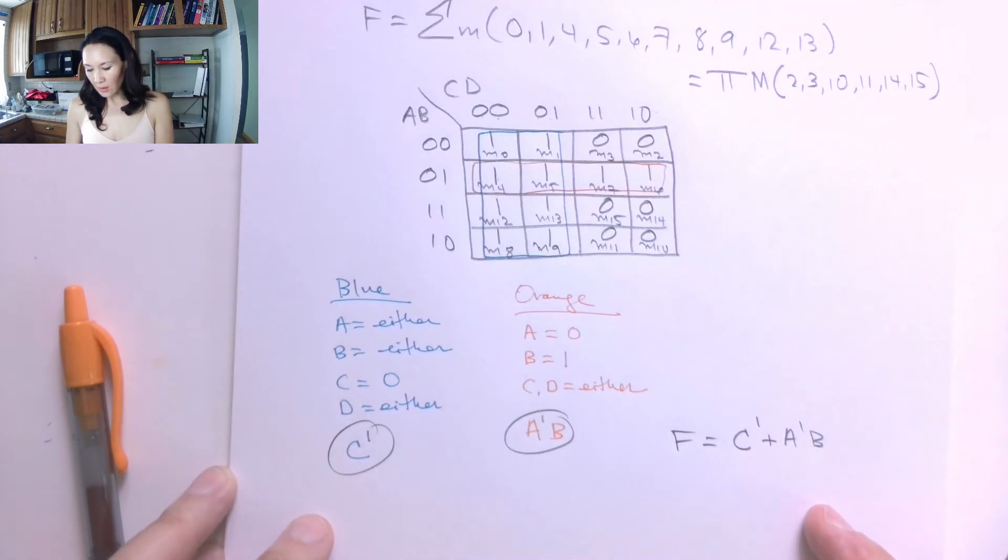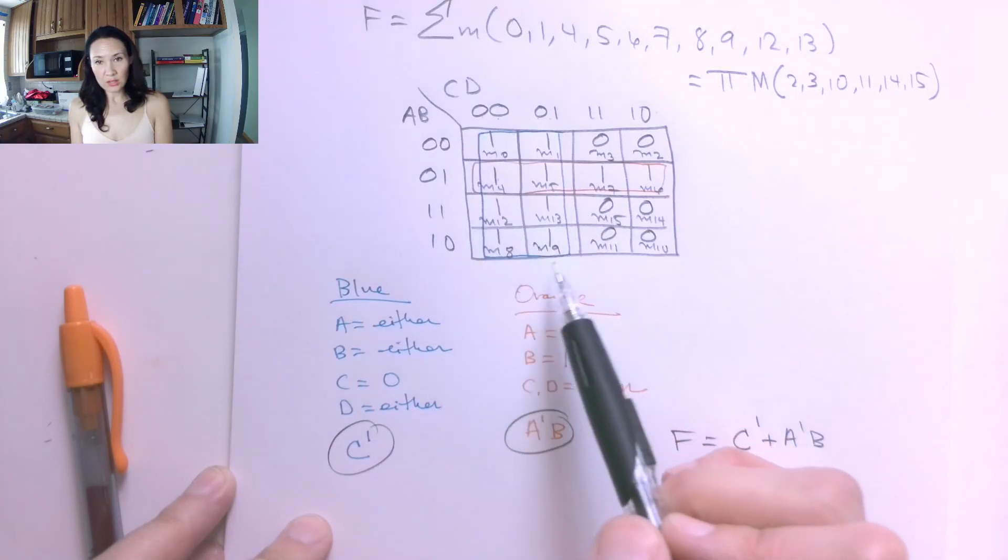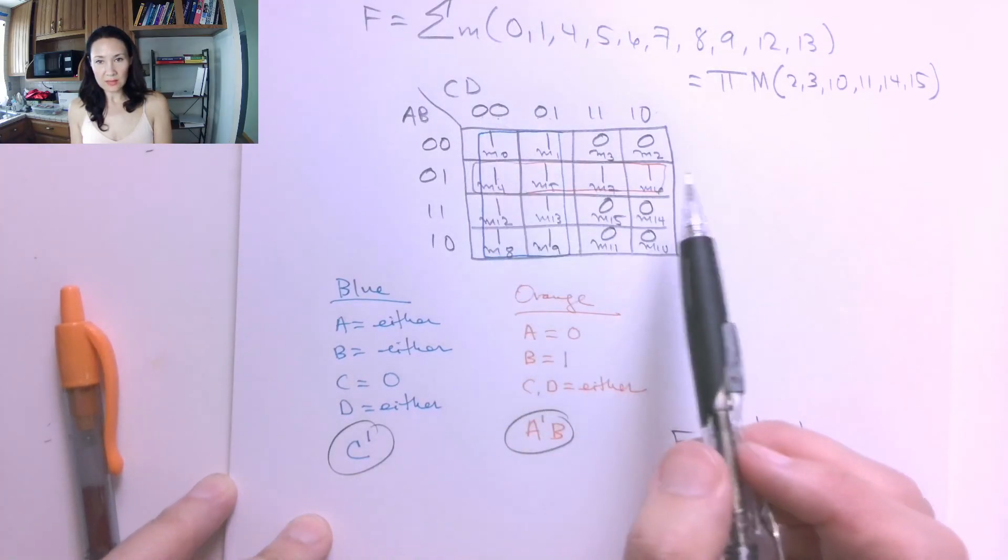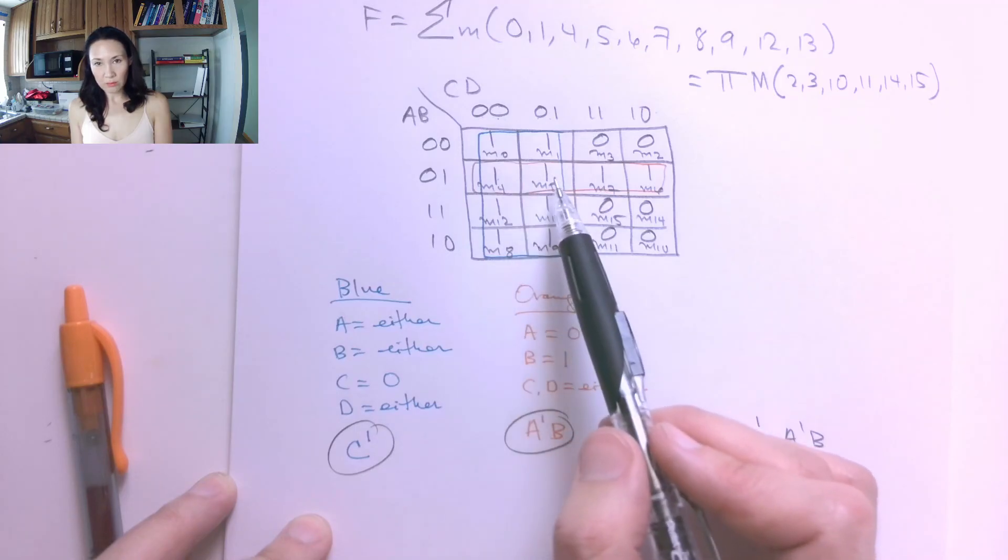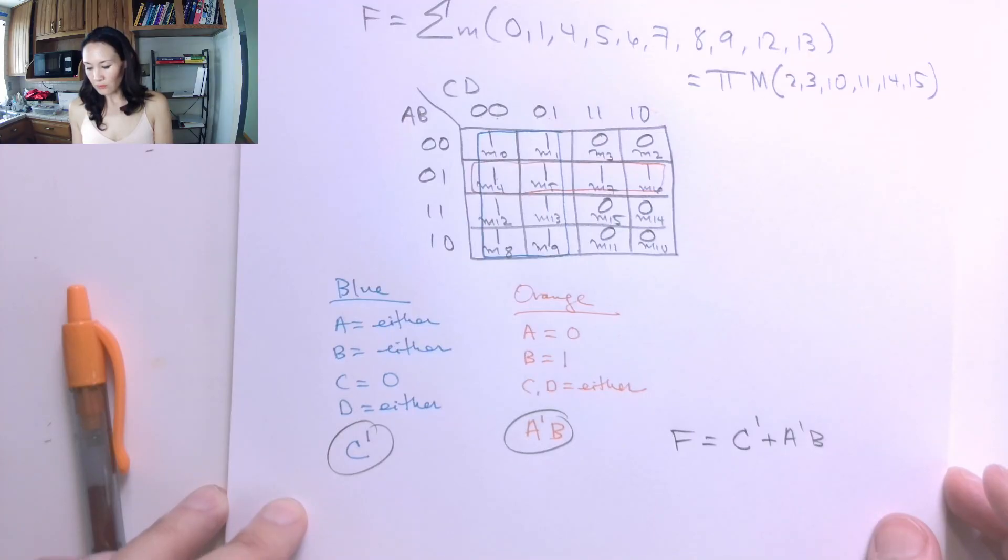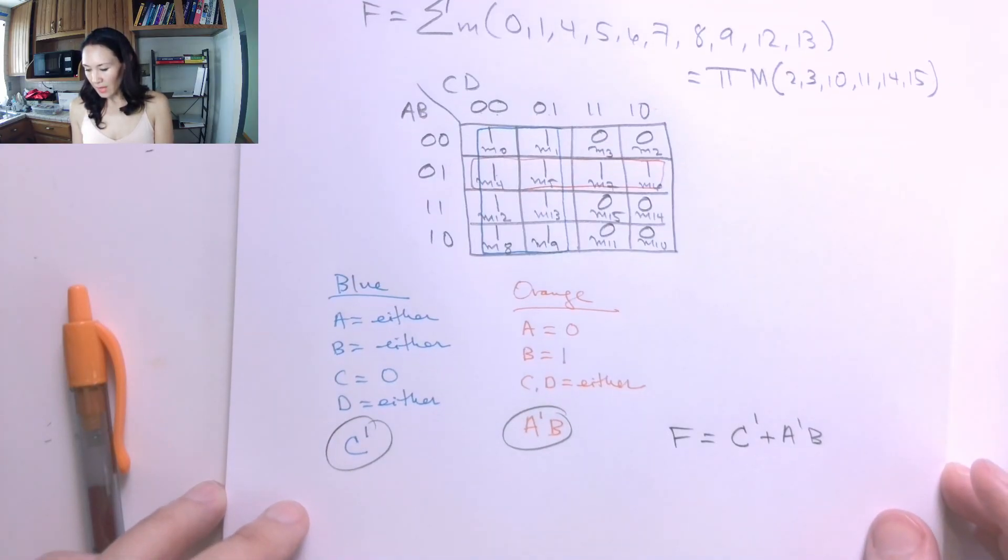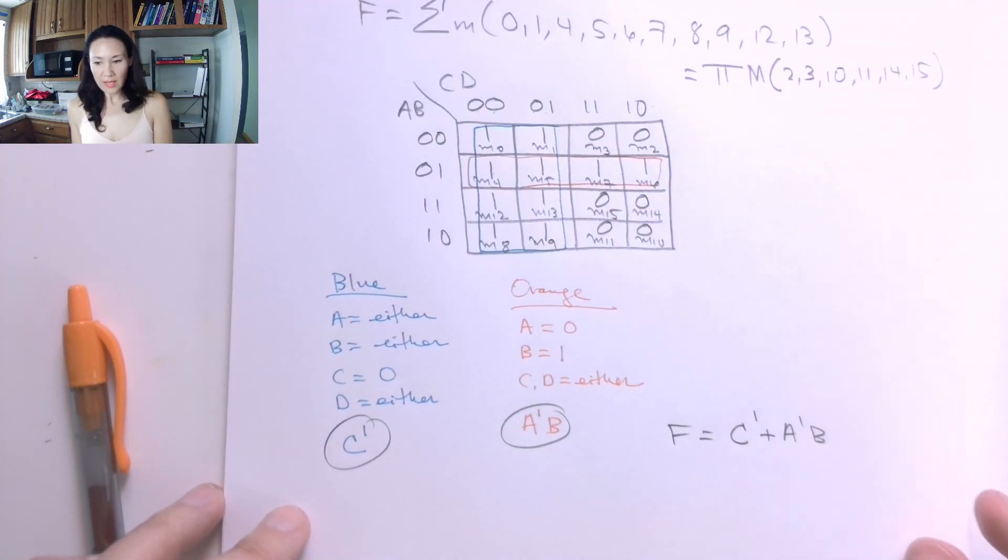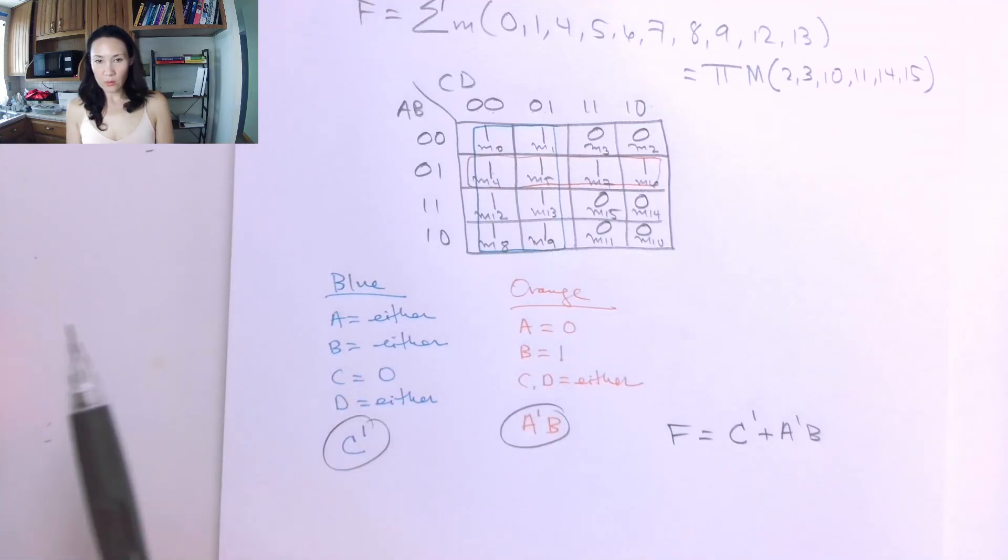So let me know if you have any questions about strategies for the groupings. Always more groupings is best, and you can reuse bits that are in other groupings. And wraparound groupings are good. Groups of 2, 4, 8, 16 are good. And yeah, in the next video, I will introduce what a don't care is.